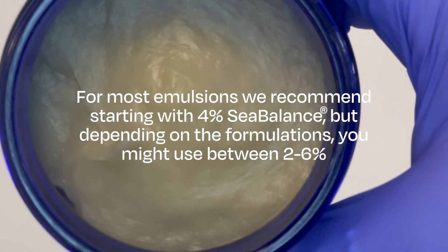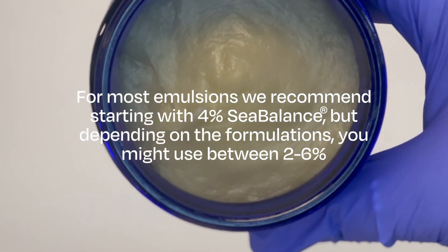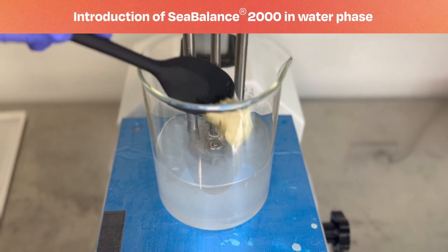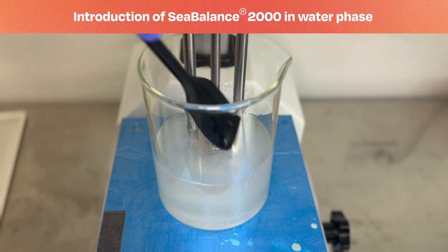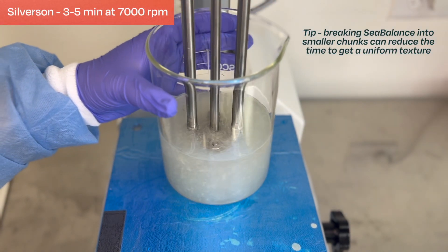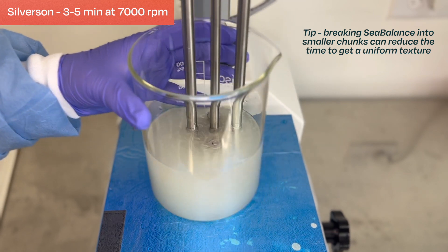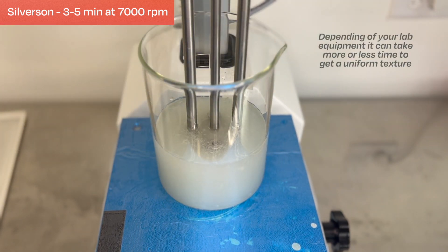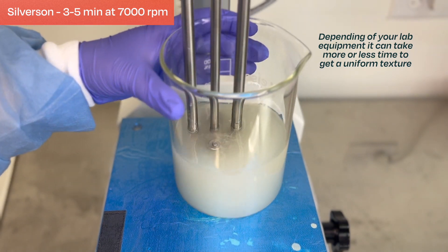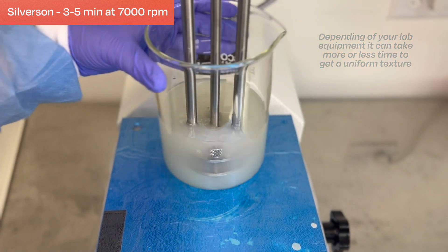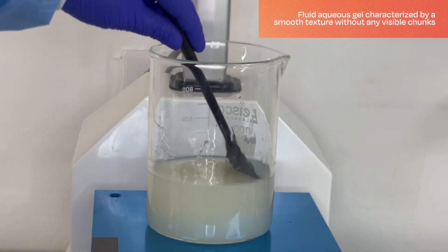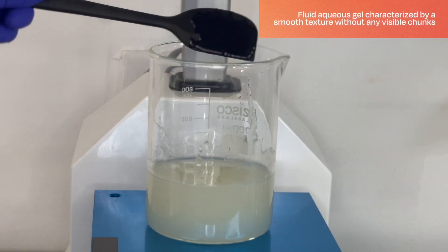Let's prepare a basic emulsion with 4% Seabalance. Now it's time to introduce Seabalance 2000 into the water phase. Use medium to high shear to disperse Seabalance until a smooth gel is achieved. Homogenize until achieving uniform consistency. This may require a few minutes. The result should be a fluid aqueous gel, characterized by a smooth texture without any visible chunks.